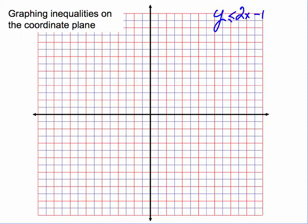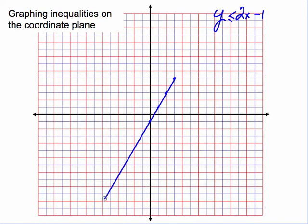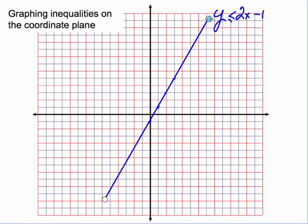Let's do another example: y is less than or equal to 2x minus 1. We'll make a quick graph — the y-intercept is negative 1, the slope is 2, so we'll plot a few points and draw the line. Since the inequality is less than or equal to, the points on the boundary are part of the solution, so we will leave the line as a solid line.